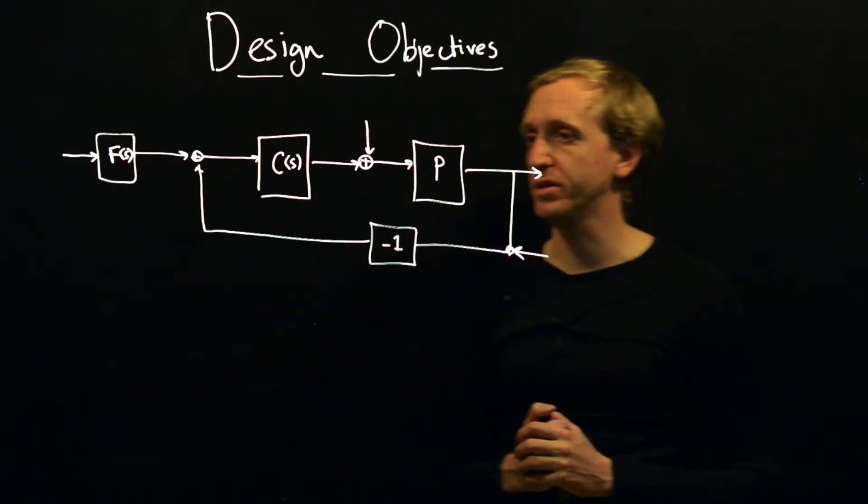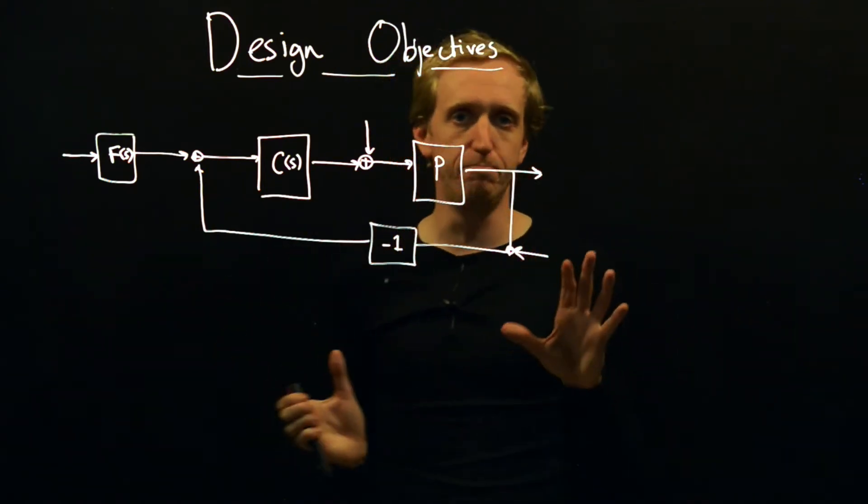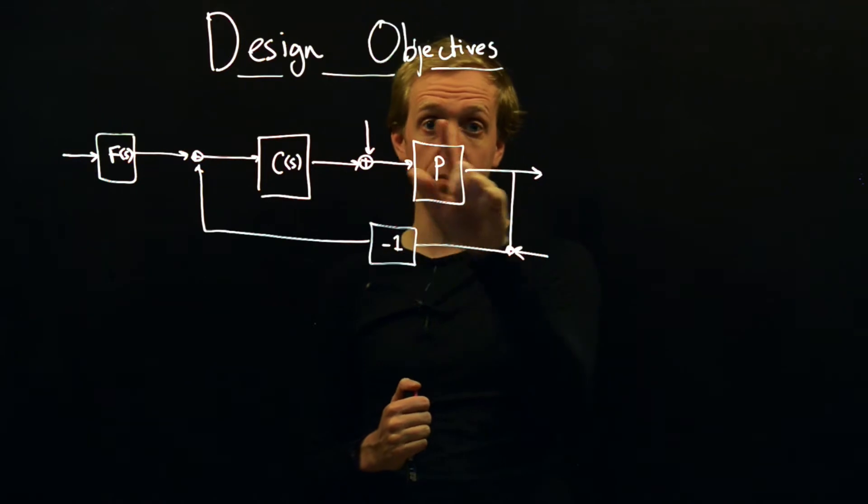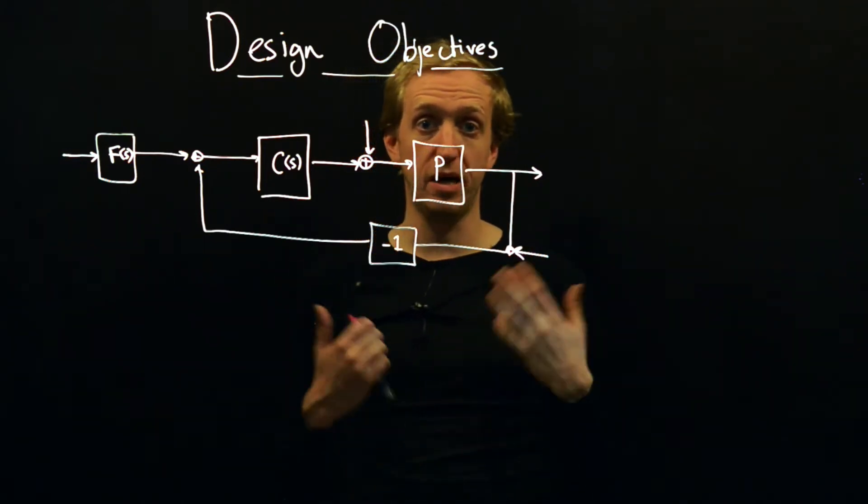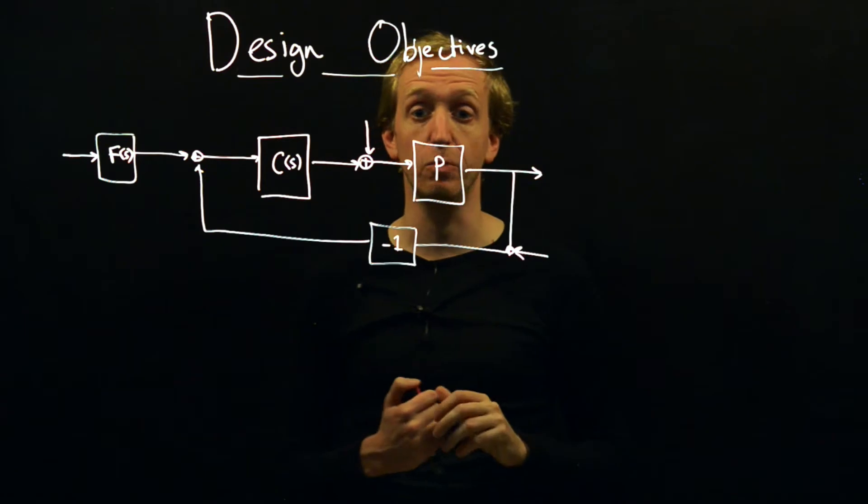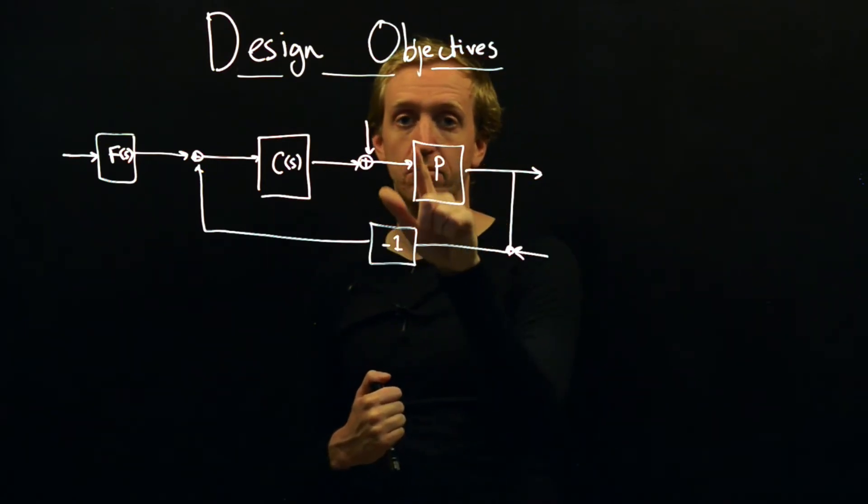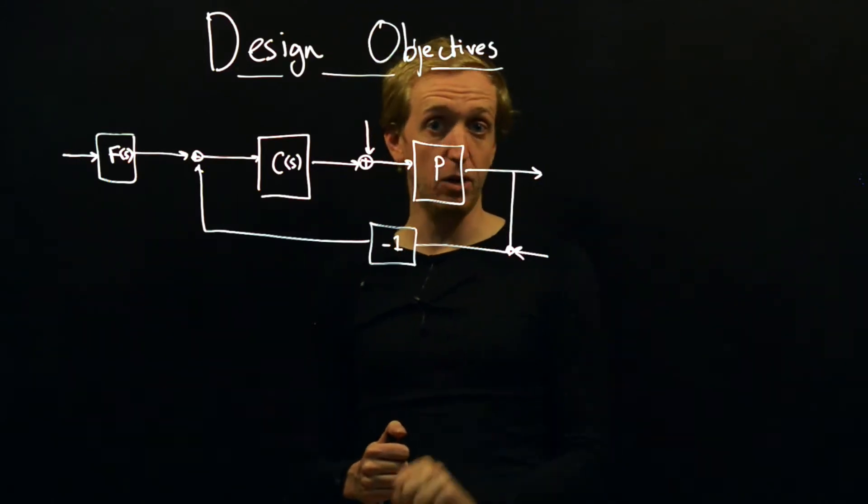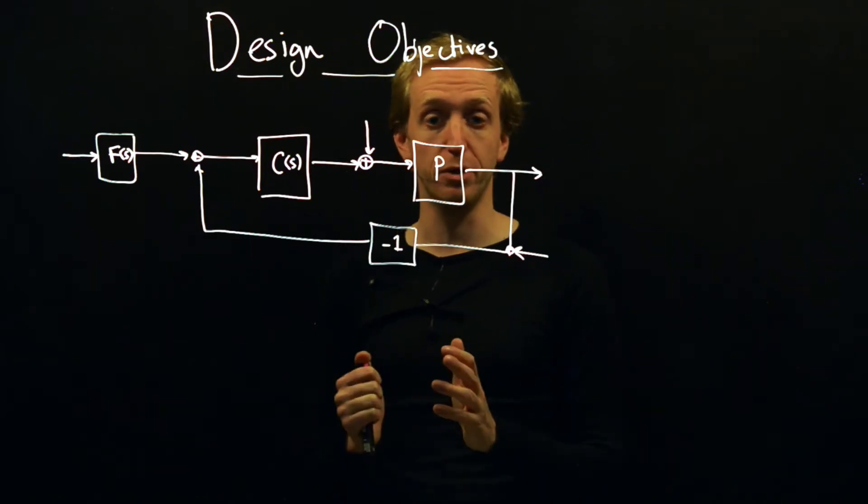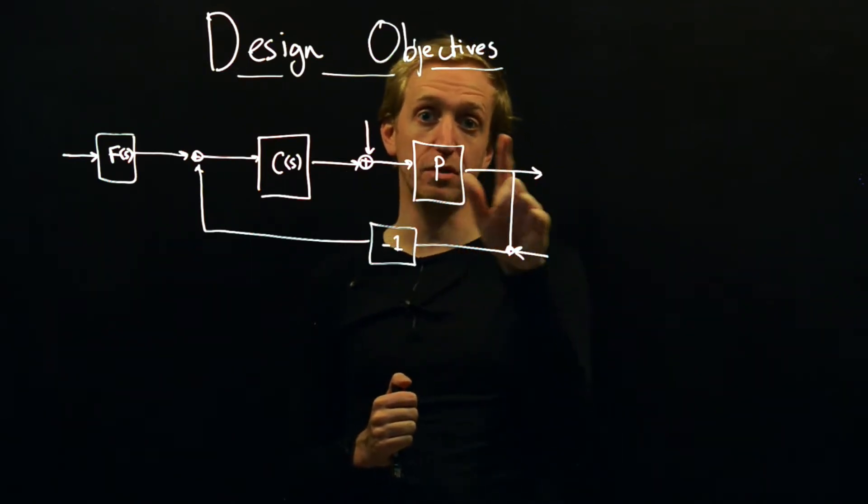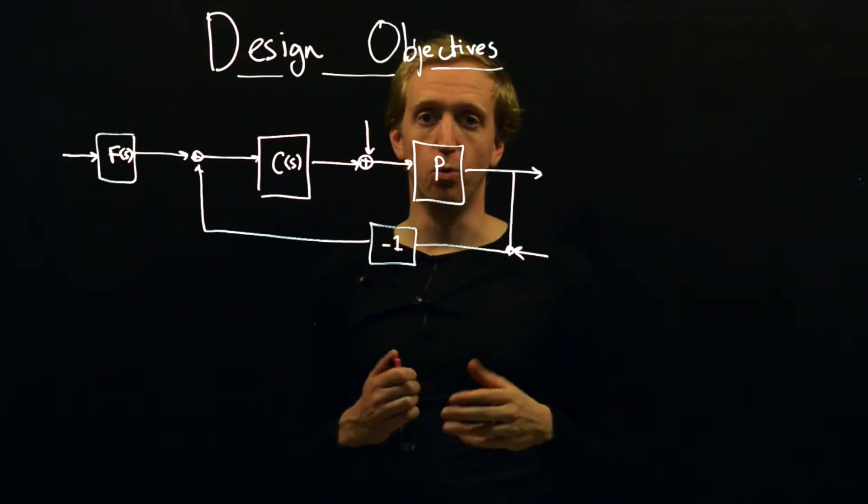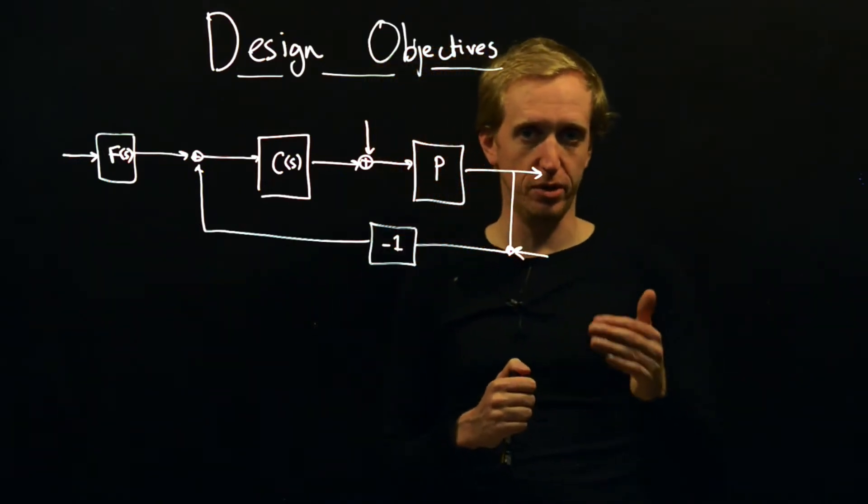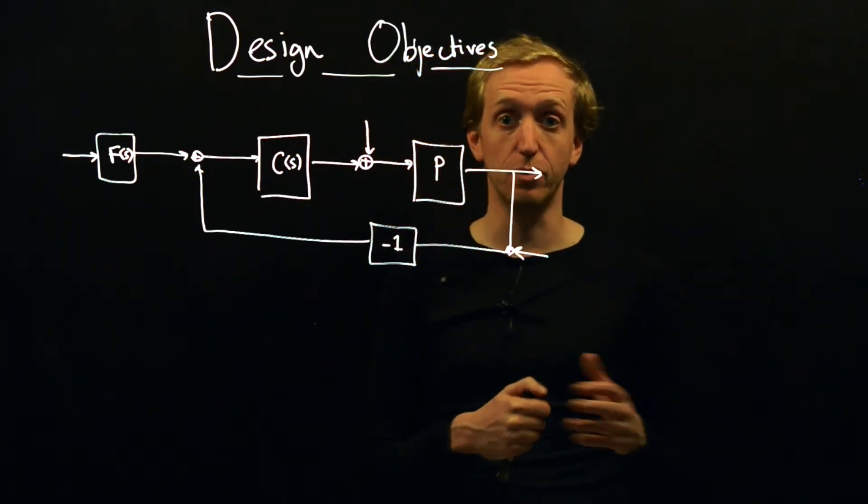So what's going on here? We have a block diagram and what are the various bits? The central object in all of this is this block that I've called P, and this is an input-output system and this is the process that we wish to control. The process has some inputs that we're free to choose - imagine this was a car, if we're driving the car we're free to determine how much we push on the pedal, and it's also got some outputs of interest.